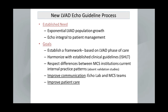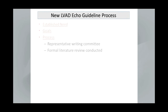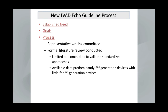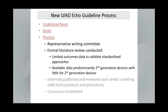How did we come about the guidelines? There's an established need — echo is determined to be integral to patient management. Our goals were to establish a framework based on LVAD phase of care, and that the guidelines would harmonize with established clinical guidelines and respect differences between the different mechanical circulatory support internal practice patterns and the absence of validation studies. Our main goal was to improve communication between the echo lab and mechanical circulatory support team members, and to improve patient care. We formed a representative writing committee, a formal literature review was conducted, and limited outcomes data to validate standard approaches were available — coming primarily from the second-generation devices with little data available at this time for third-generation devices.